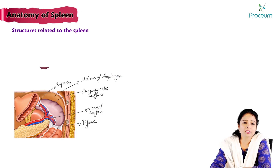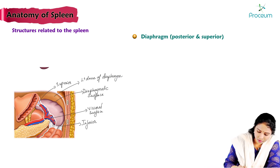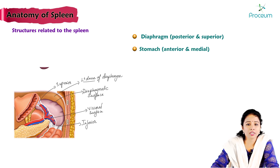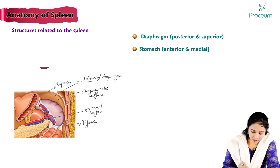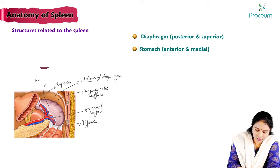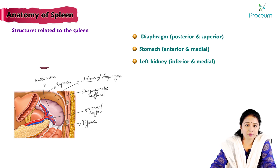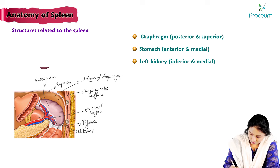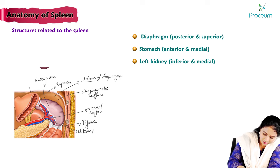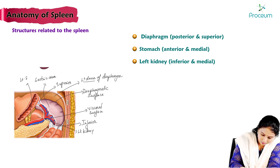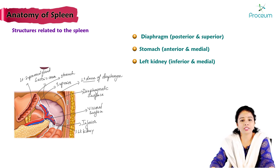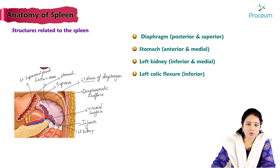The spleen is related to the diaphragm on its posterosuperior aspect. The visceral surface is related to the stomach on its anteromedial side — this is called the gastric impression or gastric area. The spleen is related to the left kidney on its inferomedial side, and also to the left suprarenal gland above the left kidney. It is also related to the left colic flexure on its inferior aspect.